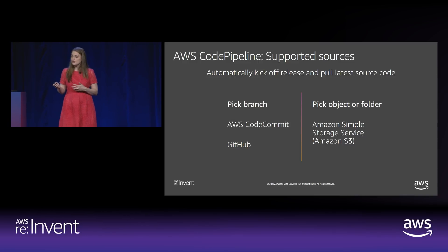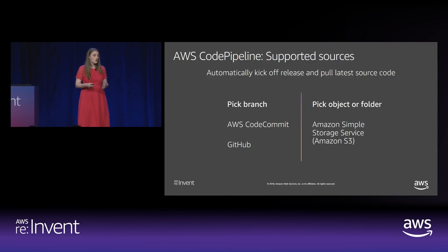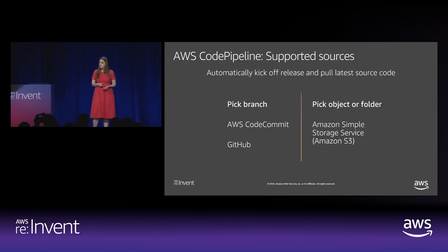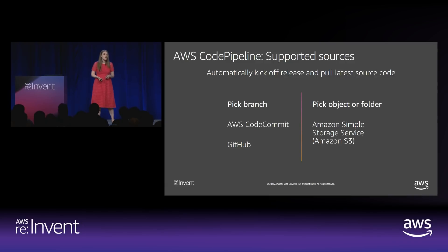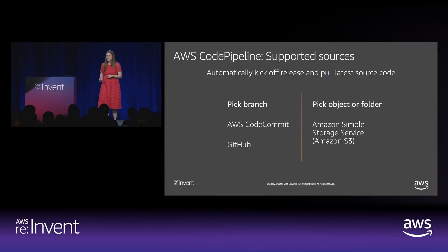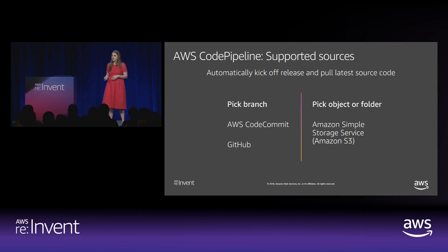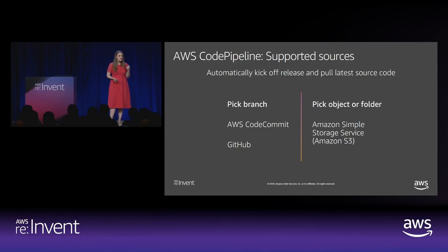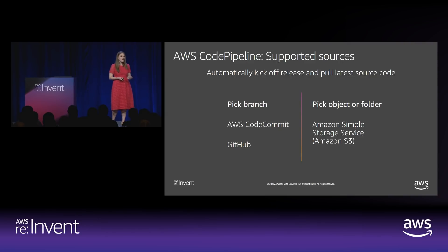CodePipeline has a few supported sources — the things that will automatically trigger a release. On the source code side, you can pick a branch in CodeCommit or GitHub. You can also store code in S3 if you're doing a dump from an on-prem repository, and it'll pick up on any changes to an object or folder. But there's something missing for containers customers in the room, and that is triggering off of a Docker image.